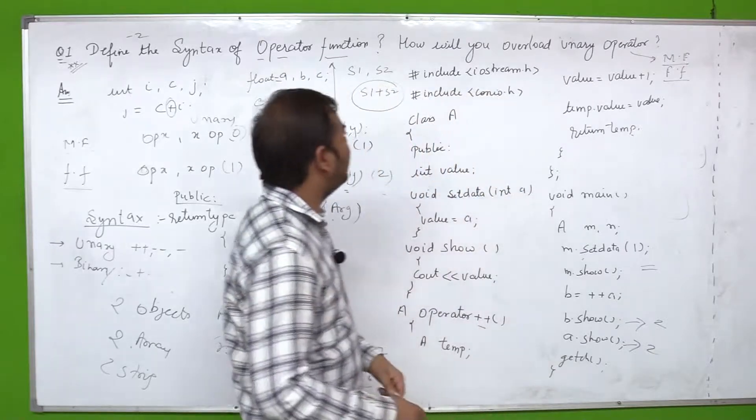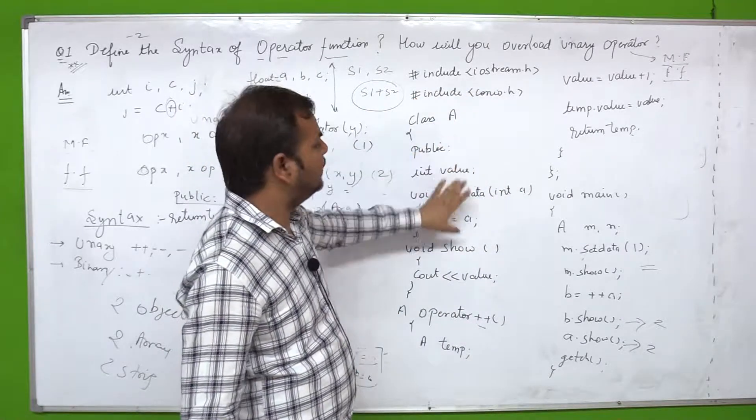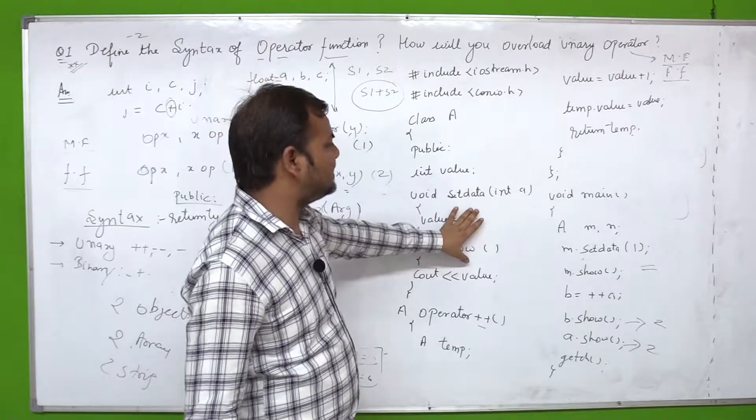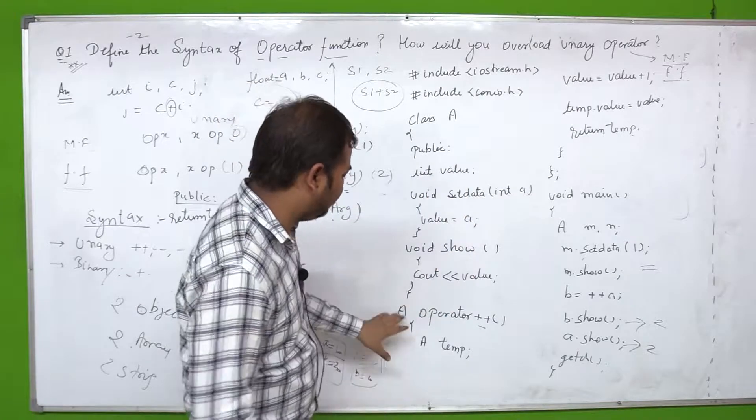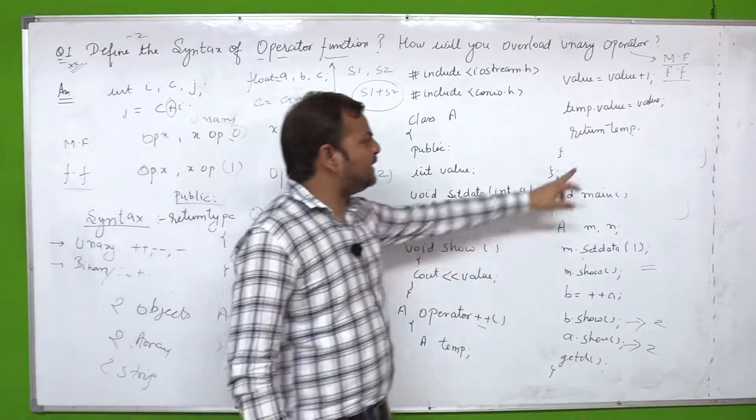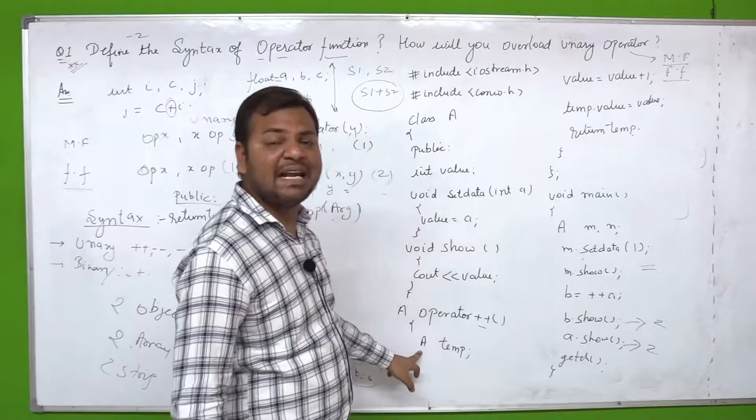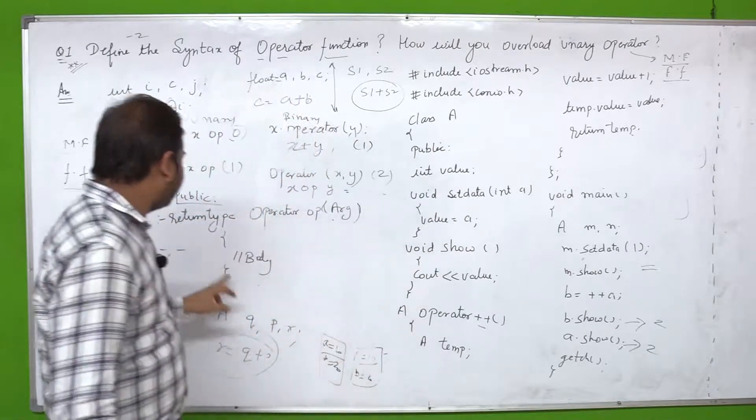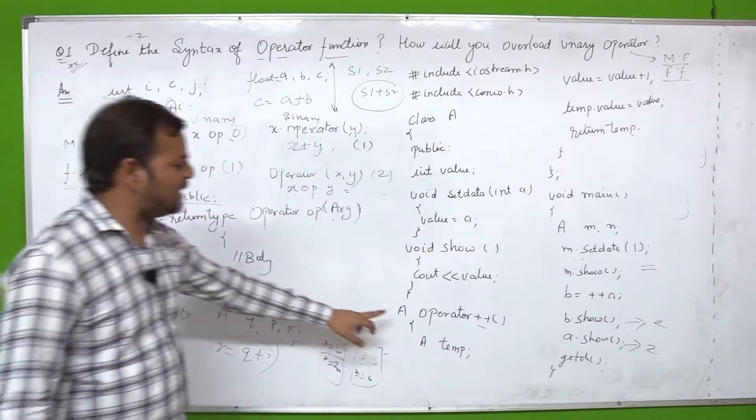If you have a question that doesn't specify, you have to write member function through. So first header file, class, value, set data, show. Let me scroll up, now see here. Important thing is - this is returning what? Temp. Temp is object of which class? A. So when object is returned, what did I tell you? Class name. What is class name? A.